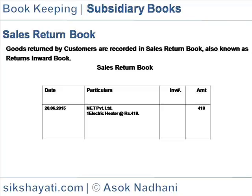The buyer returning the goods to the supplier issues a debit note on the supplier to whom the purchased goods are returned. On the other hand, the supplier receiving back the returned goods issues a credit note on the buyer who returned the goods. The supplier, on issuing the credit note, enters the details in the sales return book.